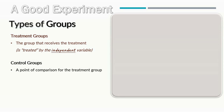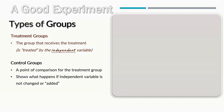Both of these types of groups in your experiment are incredibly important. The control group helps show what happens if the independent variable is not changed or added. This serves as a perfect point of comparison so you can ensure that your data collected from your treatment groups actually means something. If your treatment group gets the same results as your control group, that won't tell you very much.